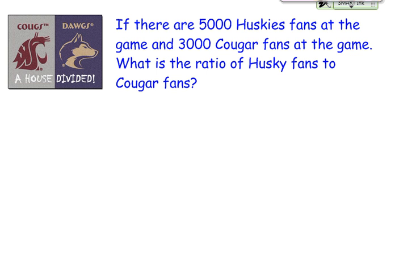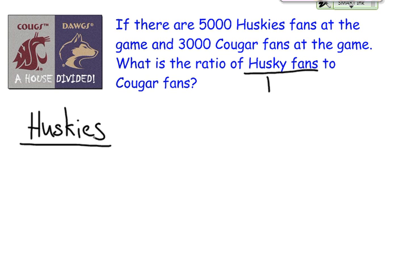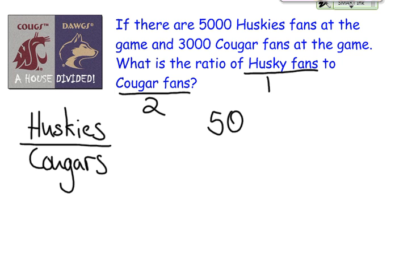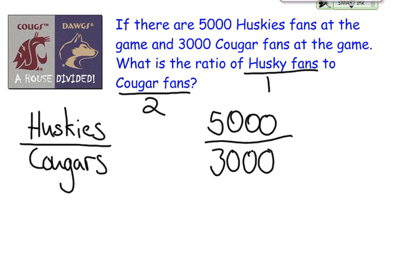Now, once again, we've got to start by understanding what the comparison is. Here's our fraction. Huskies comes first, so that has to be on top. And Cougars comes second, so that has to be on bottom. Now that we have that information, we can plug our numbers in. We see that there are 5,000 Husky fans and there are 3,000 Cougar fans — and so we have that comparison.